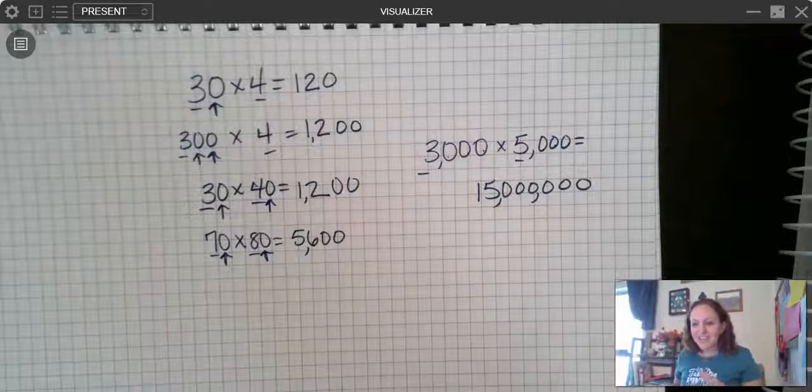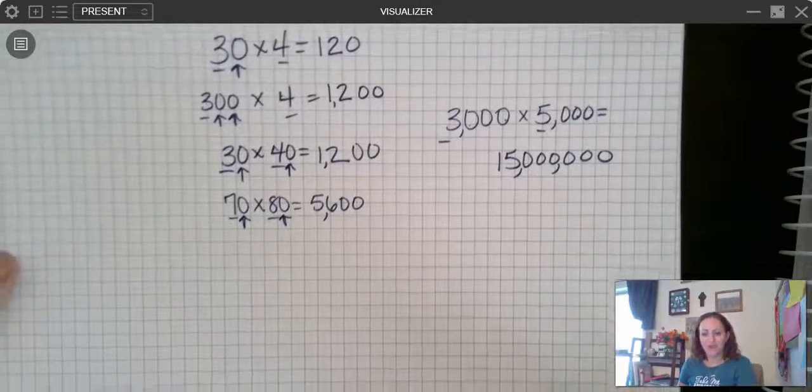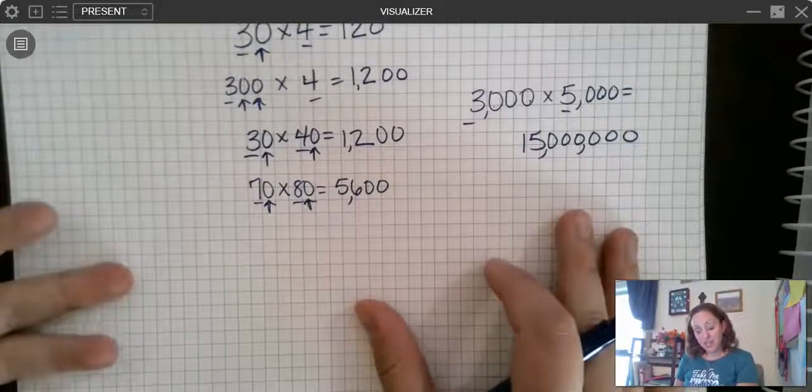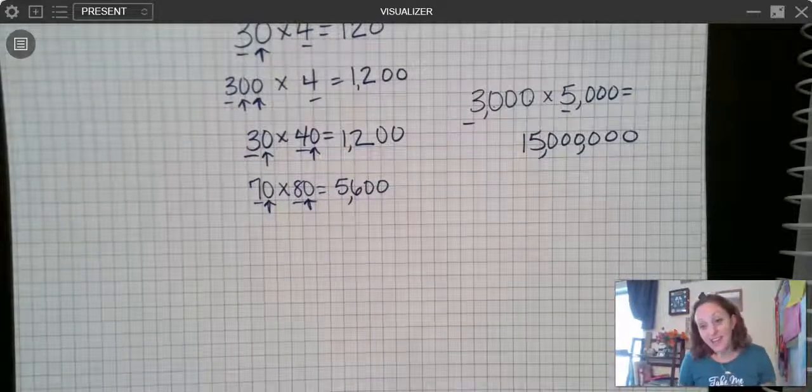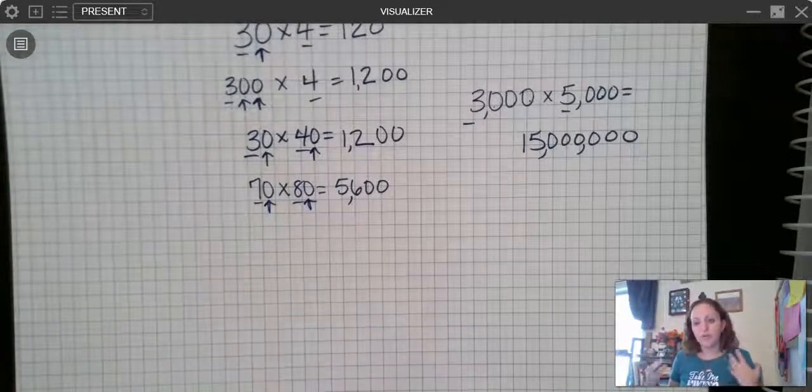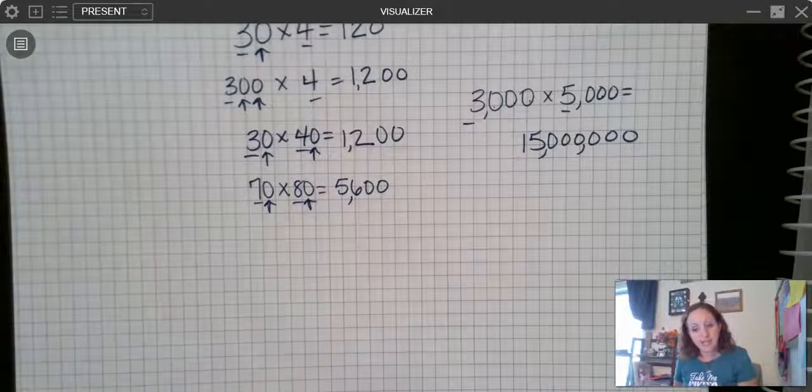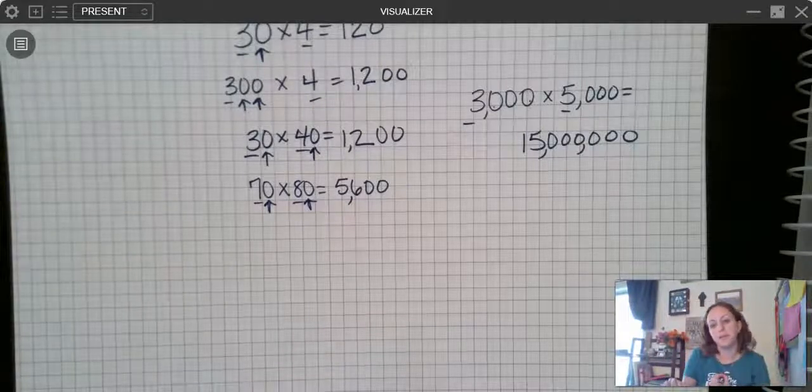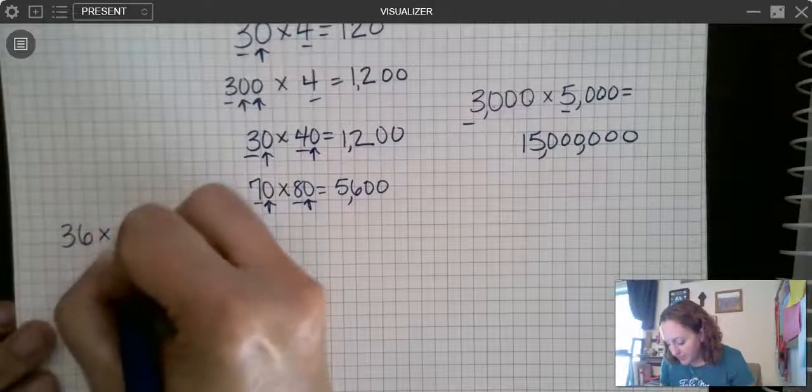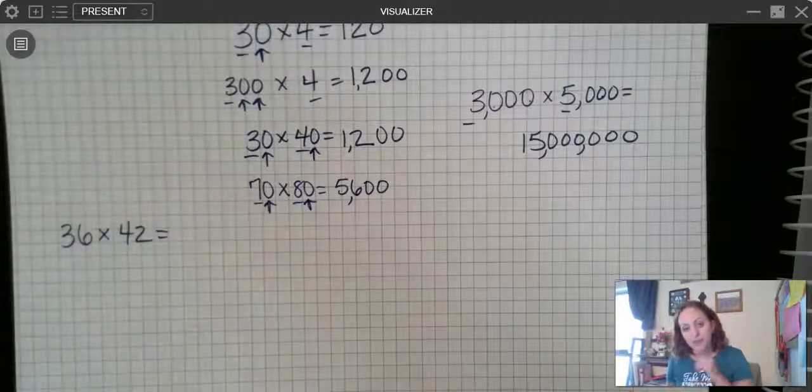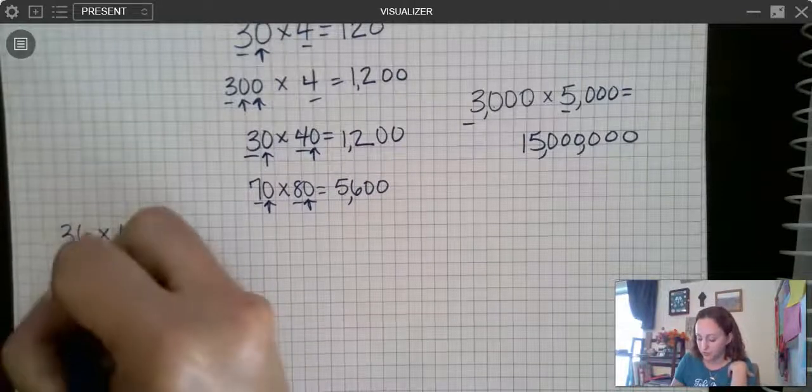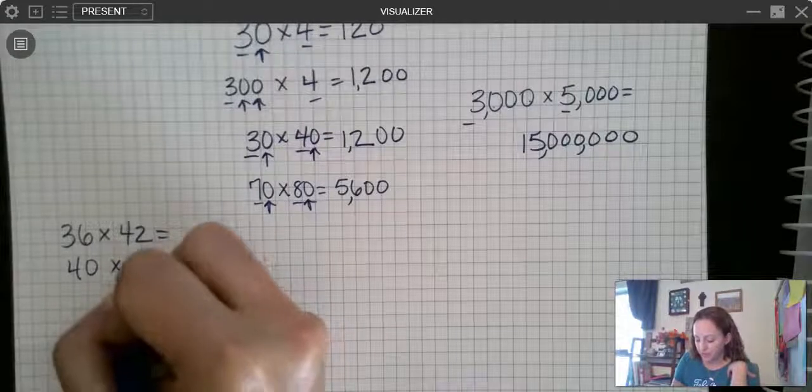All right, so let's look at our next thing that we're talking about. Now we're going to look at how we can use this, what we're doing here, to round to get an estimate. We're rounding to get an estimate. Now for the most part we're going to be rounding to the nearest tens place because we're doing double digit numbers times double digit numbers. So let's say I have 36 times 42. I'm going to round both of these numbers to the nearest 10. Well 36 would round to 40 and 42 would round to 40.